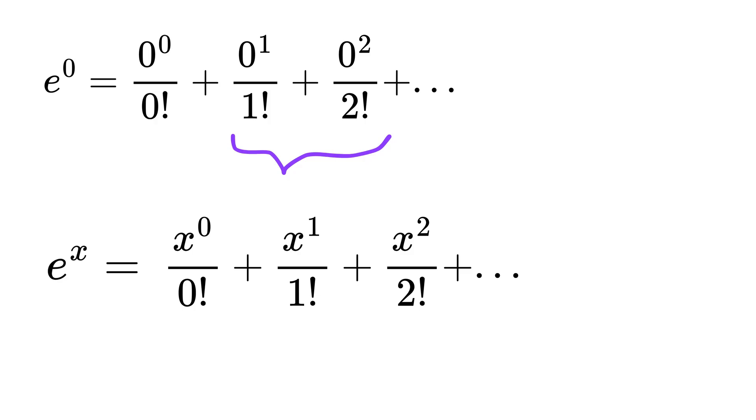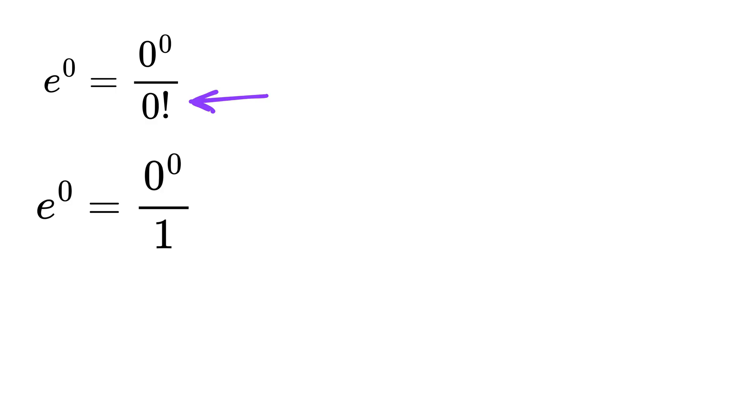All terms after the first become zero, because zero raised to any positive number is zero. So we are left with only one term, zero raised to zero divided by zero factorial. Zero factorial is one and e raised to zero equals one.